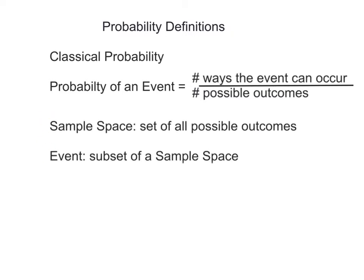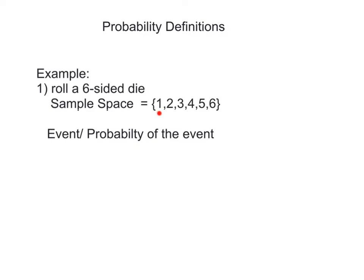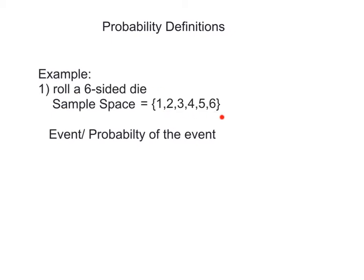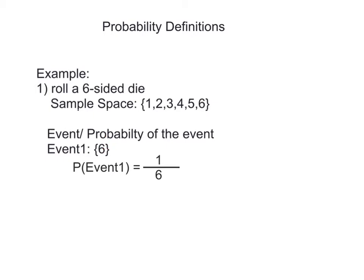We have two definitions that will help us visualize this definition of probability. The first one is sample space — that is the set of all possible outcomes. The event is the subset of the sample space. Our first example is rolling a six-sided die where our sample space is a roll of 1, 2, 3, 4, 5, or 6. We might define event 1 as rolling a 6, so the probability of that event is one possible way out of 6 possible outcomes. We might define event 2 as rolling a 2 or a 3 — there are two ways for that to occur out of 6 possible outcomes, so the probability is 2 over 6.